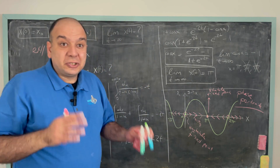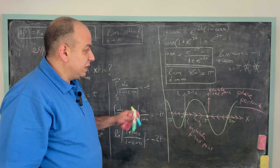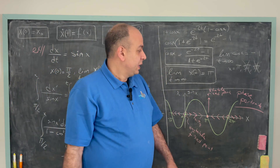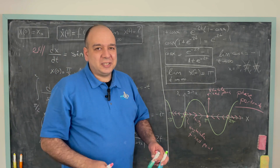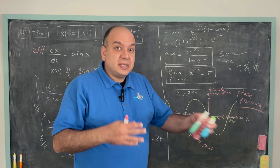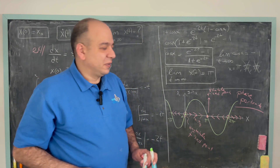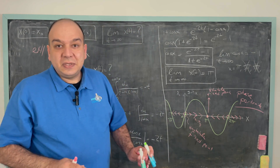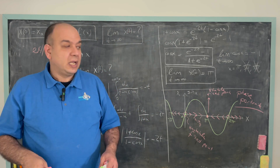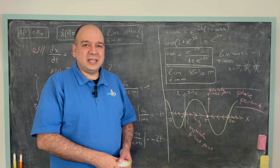On our channel, we solved a much more complicated problem using phase diagrams — a one-dimensional kinematics problem where the system was oscillating, so the phase diagram looked a bit different. I'll put the link in the description. I hope you enjoyed solving these problems using x-dot versus x plots. If you have questions, ask in the comments. See you in the next videos.